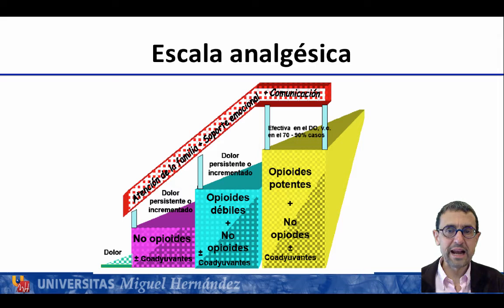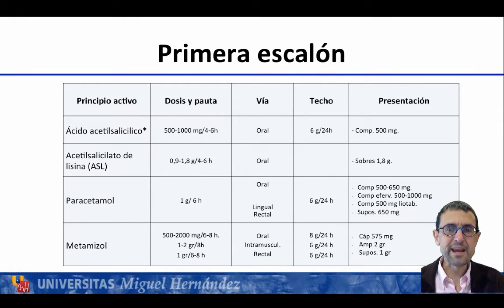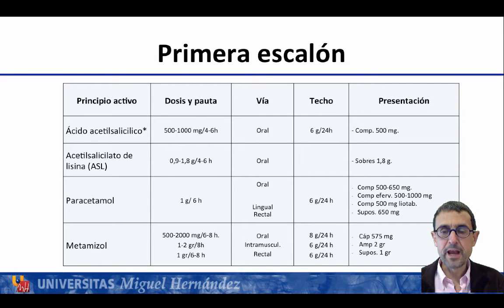Dentro de la escala analgésica clásica de la OMS, el primer escalón utiliza fármacos no opioides con coadyuvantes: ácido acetilsalicílico, acetilsalicilato de lisina, paracetamol y metamizol. En la tabla correspondiente están detalladas las dosis, la vía de administración, el máximo administrable y las formas de presentación de estos cuatro fármacos del primer escalón analgésico.